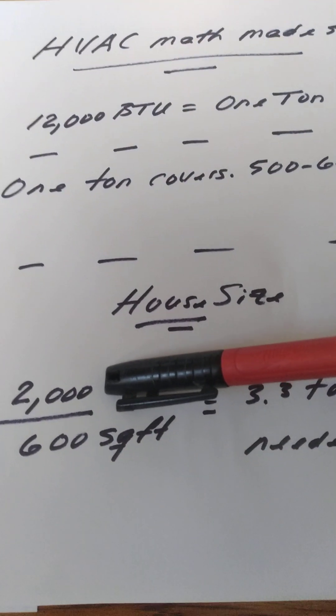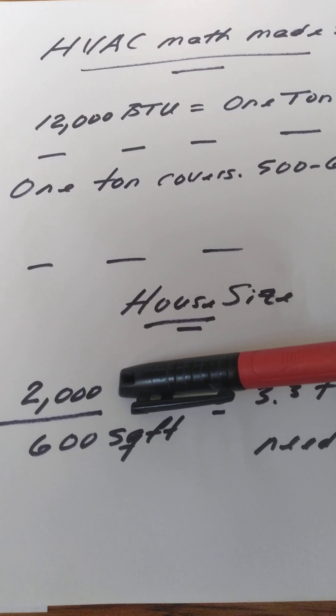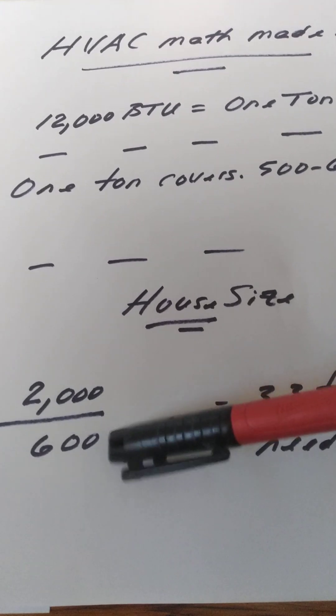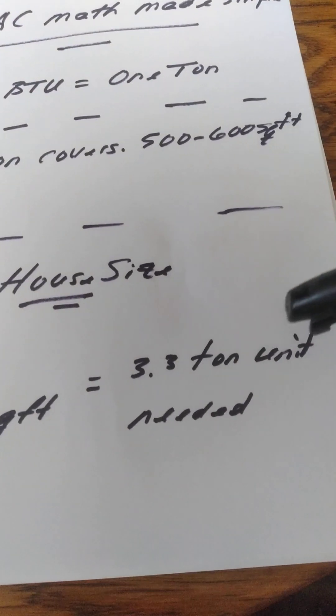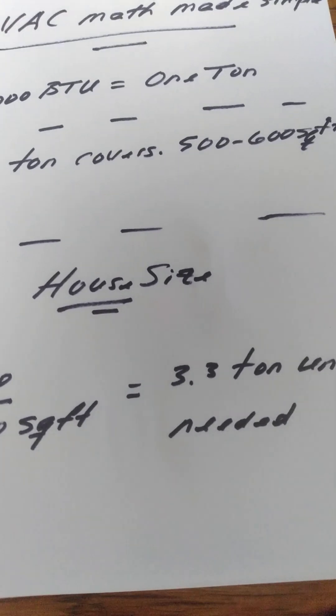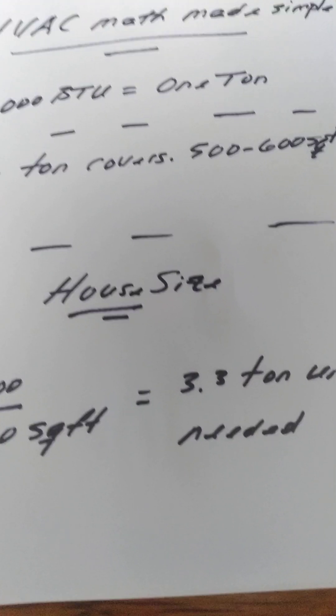You put this number here. This house here, for just a hypothetical, I put in 2,000. 2,000 divided by 600 equals 3.3 ton unit needed. So one in this case would need around a three to three and a half ton unit to heat and cool roughly a 2,000 square foot house.